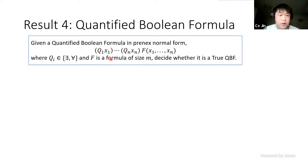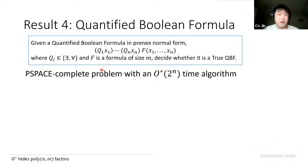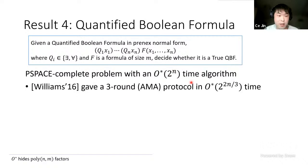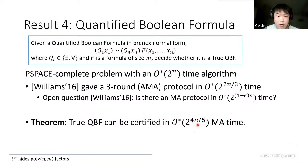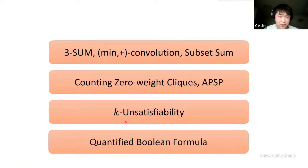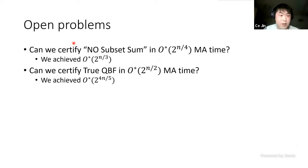Our fourth result is about Quantified Boolean Formulas (QBF), a canonical PSPACE-complete problem. The brute force takes 2^n time. Previous work by Williams gave a three-round AMA protocol in 2^(2n/3) time, with an open question of whether an MA protocol better than 2^n time exists. We show the answer is yes: an MA protocol in 2^(4n/5) time for certifying a true QBF. Two open problems: can we improve the no-subset-sum protocol from 2^(n/3) to 2^(n/4), and can we certify true QBF in 2^(n/2) MA time?